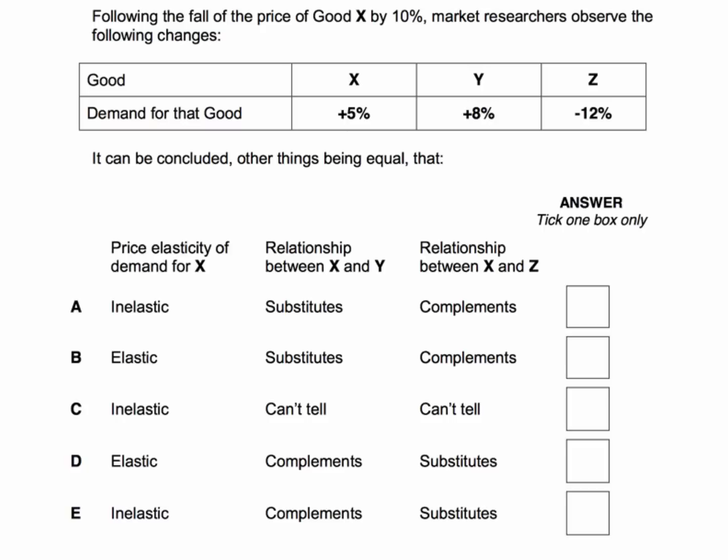What can we conclude? Ceteris paribus — other things being equal. Well, the technique here, of course, is to go from left to right and just check out whether each answer is right or wrong.